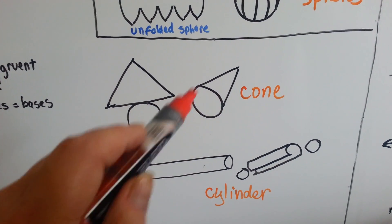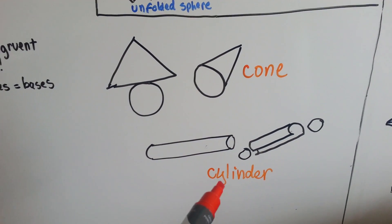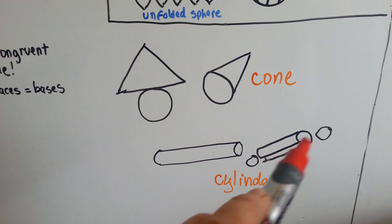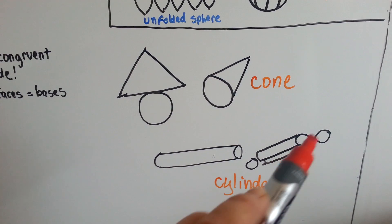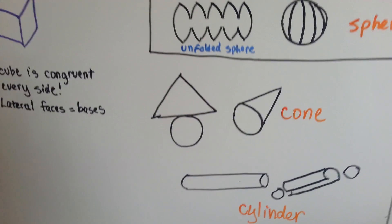So, a cone is like this, sort of like an ice cream cone or a party hat. And the cylinder is like a paper towel tube that you open up. Except, instead of holes, it has caps on the end.